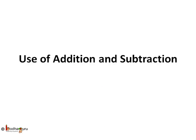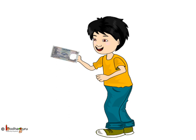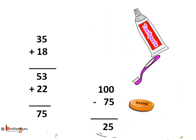Hello children, we do addition and subtraction all the time. Say your mother gave you a hundred rupee note and asked you to buy a toothpaste, toothbrush, and a soap. Toothpaste costs 35 rupees, toothbrush costs 18 rupees, and a soap costs 22 rupees. How much is left from hundred rupees?